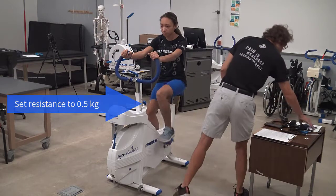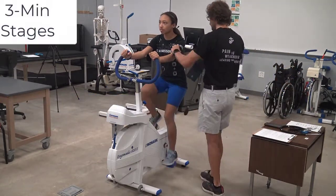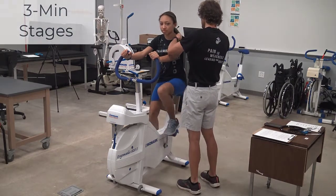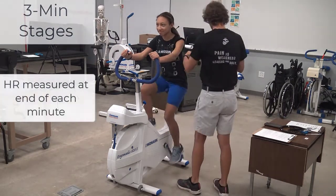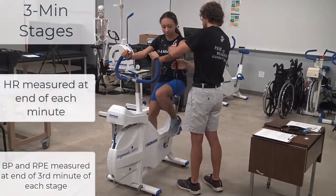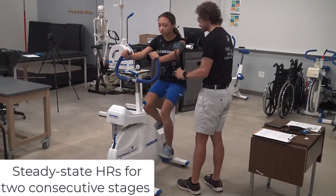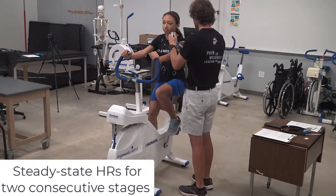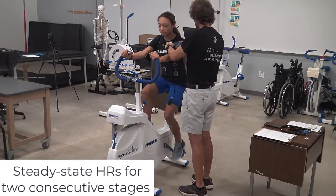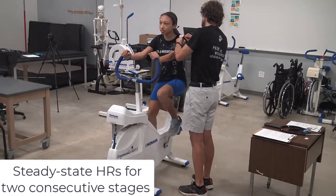Fit the blood pressure cuff on your client as they continue to pedal and be ready to take heart rate. Each stage is 3 minutes long and heart rate should be taken during the last 15 to 30 seconds of each stage, and blood pressure and RPE is taken at the end of the third minute of each stage. Remember, the goal is to achieve a steady state heart rate between 110 and 150 beats per minute for two consecutive stages.